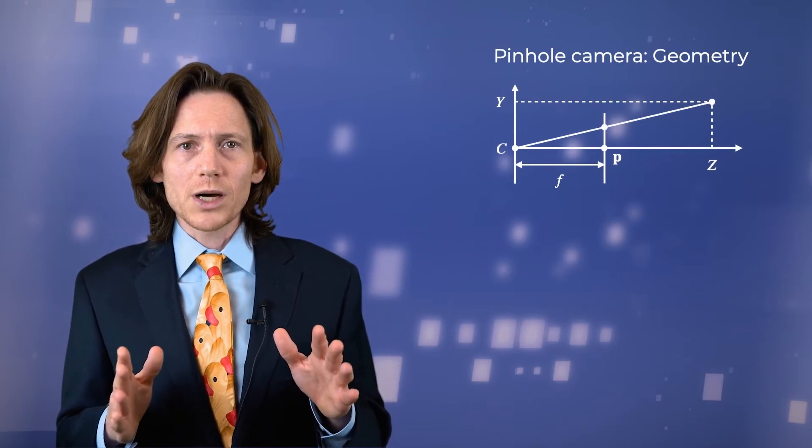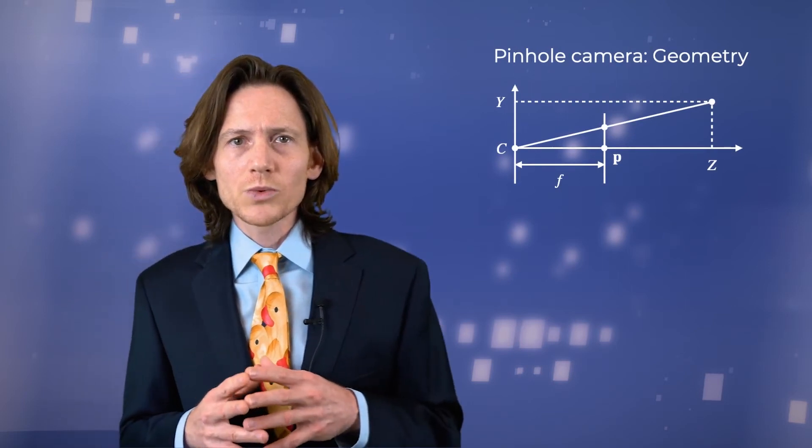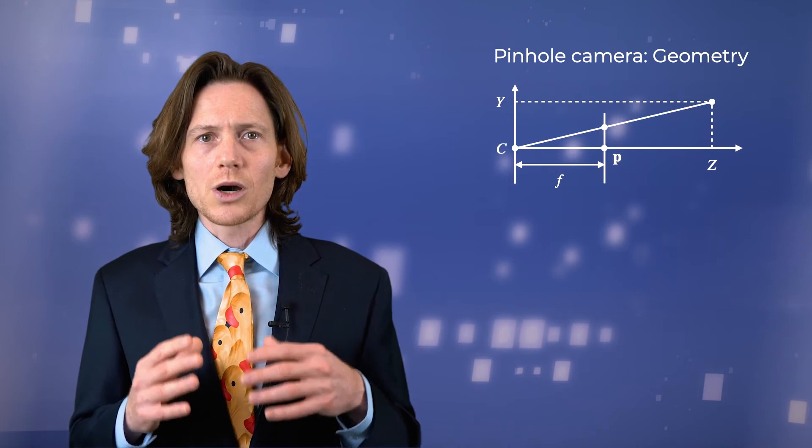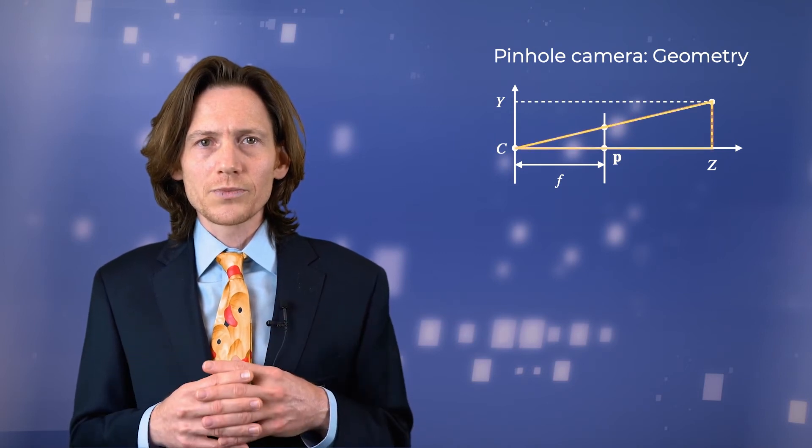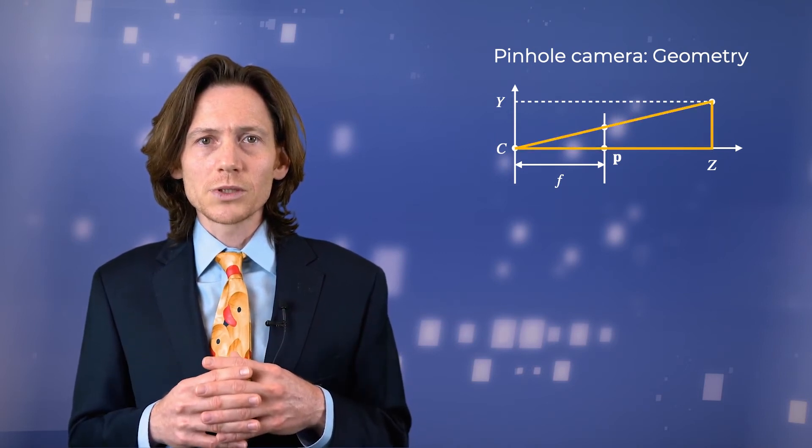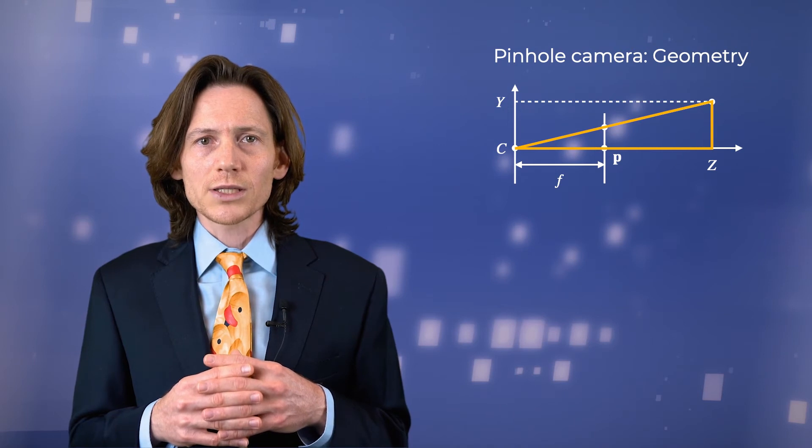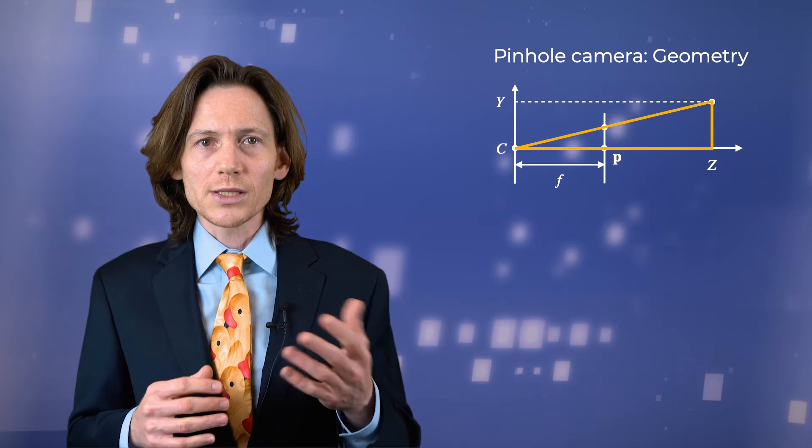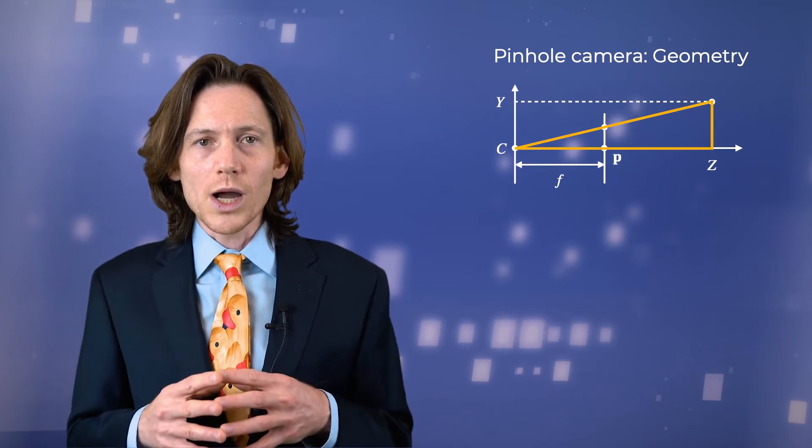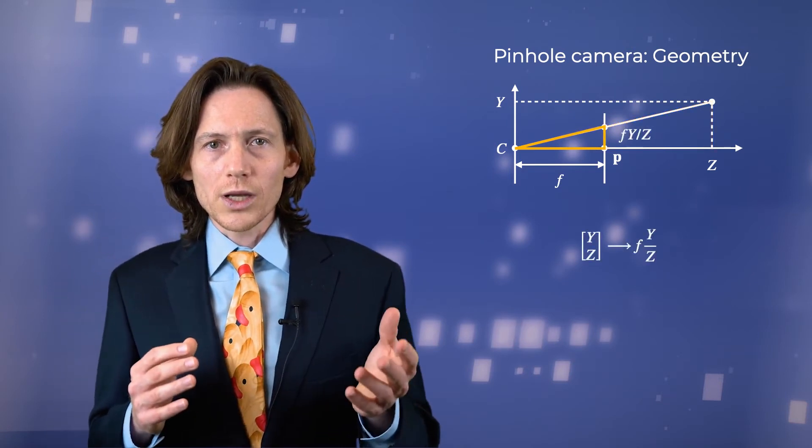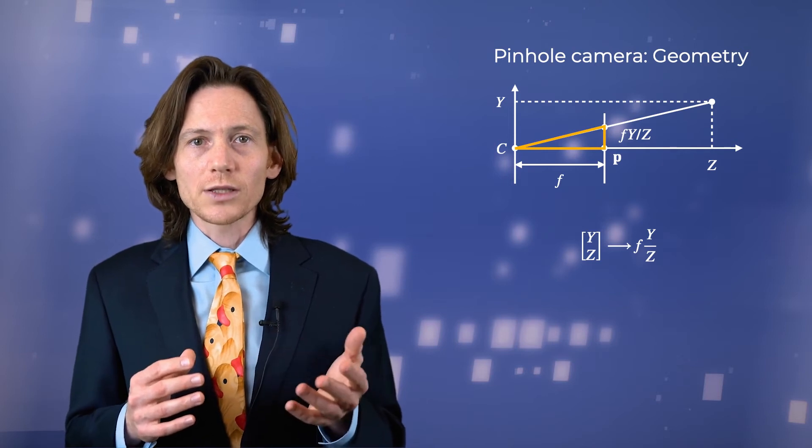Before we derive the full perspective projection model, let's look at a simpler setting in which we project a two-dimensional scene point onto a one-dimensional image. In this case, we have two similar right-angle triangles that share a vertex at the camera center c.